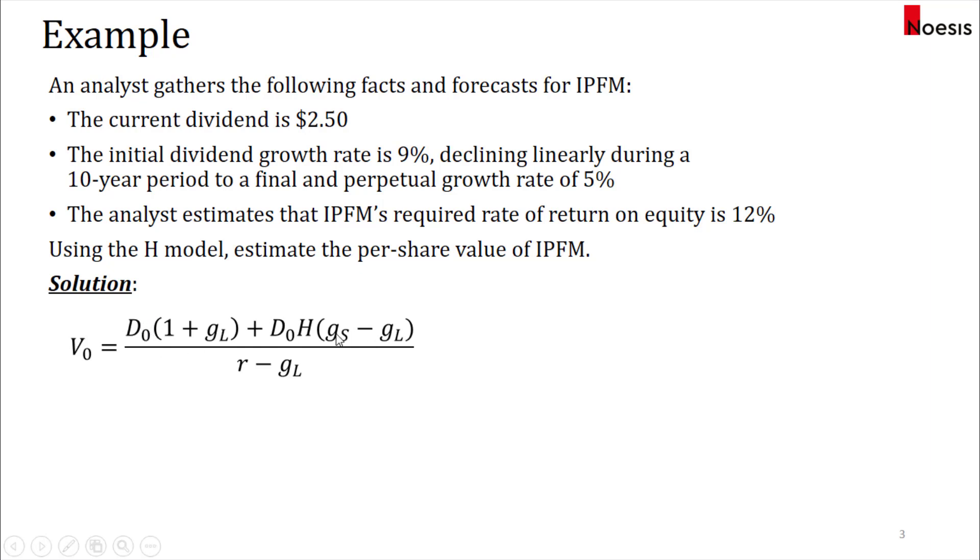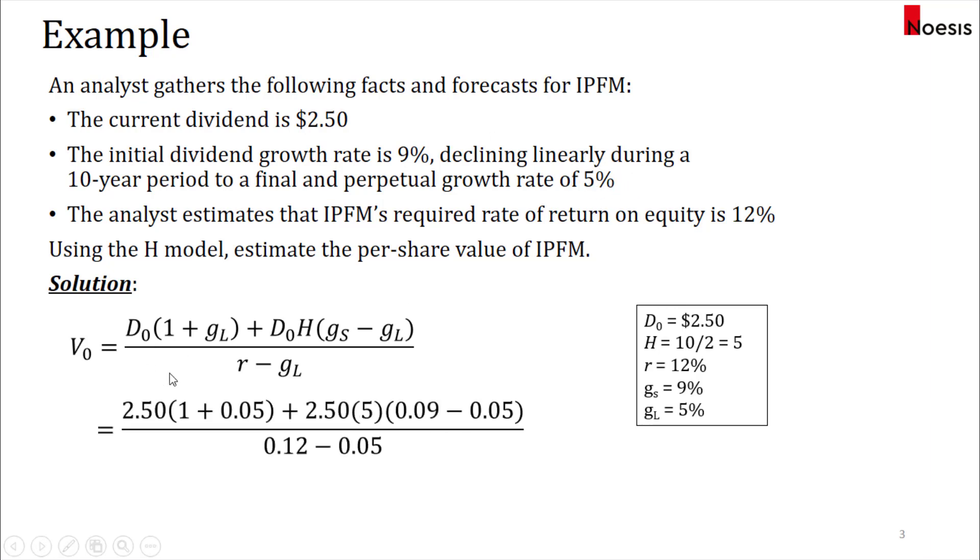What are the values of all the inputs here? We have the current dividend D sub 0, half-life is 10 divided by 2, and the required rate of return is 12%, the initial high dividend growth rate is 9%, and the long-term growth rate is 5%. So substituting all the values in, and once we simplify it, we'll get $44.64.